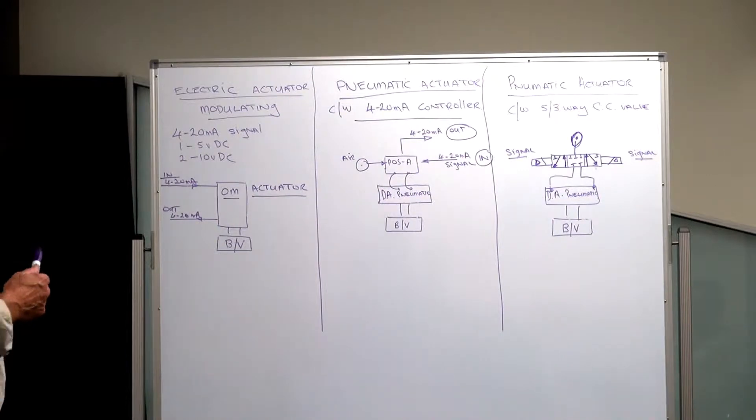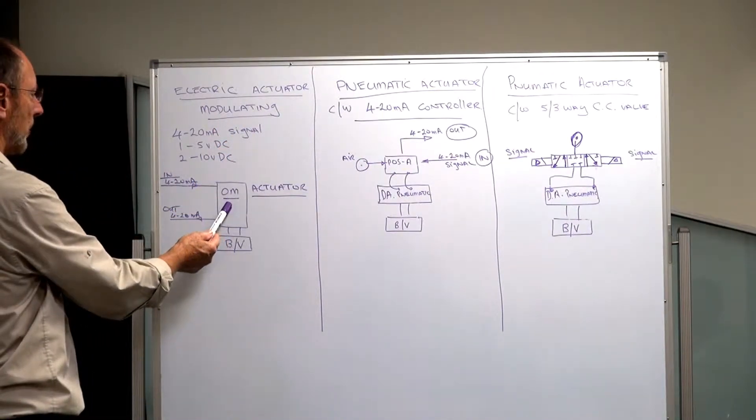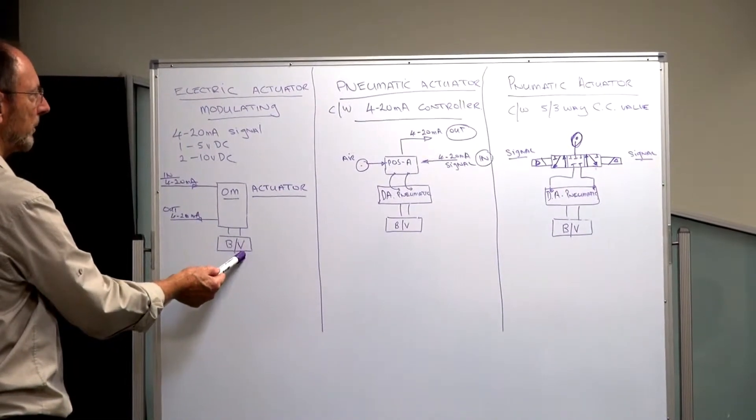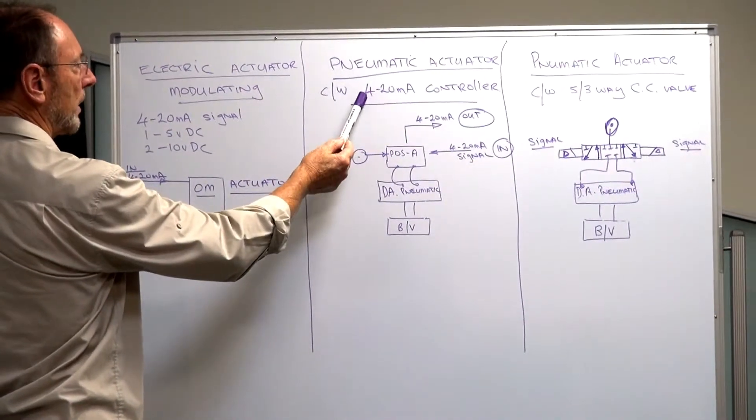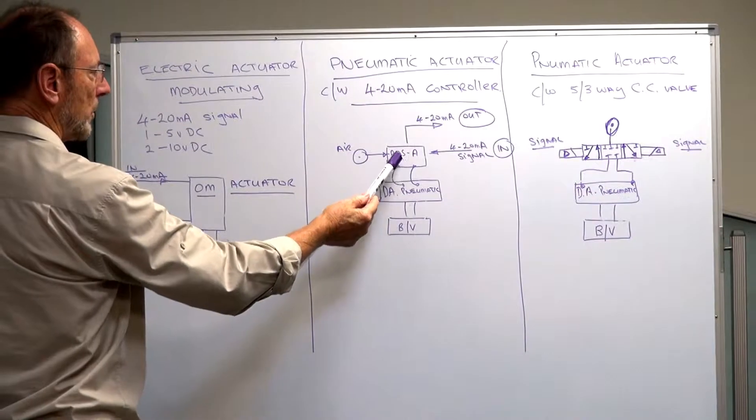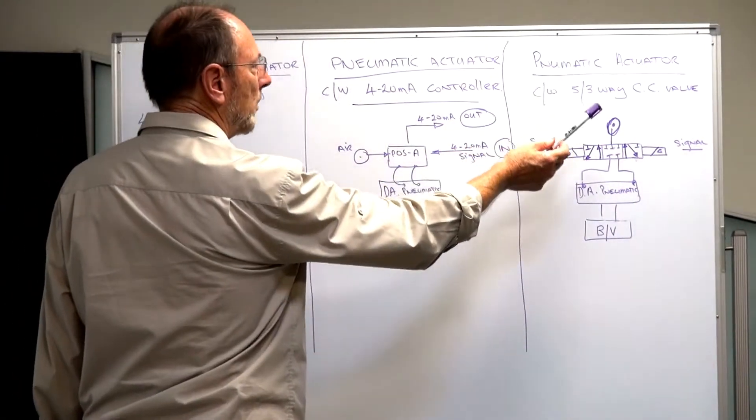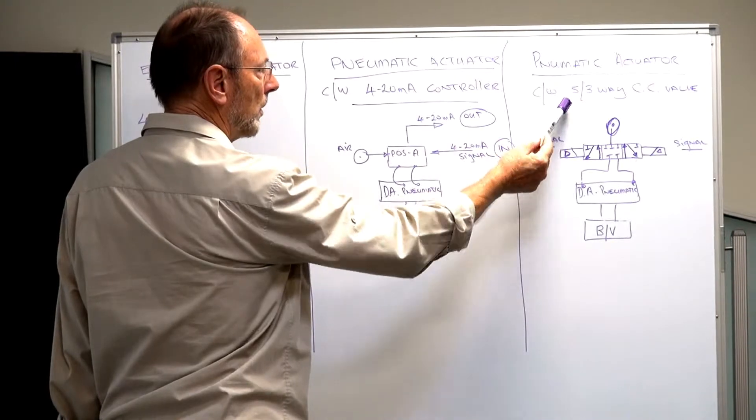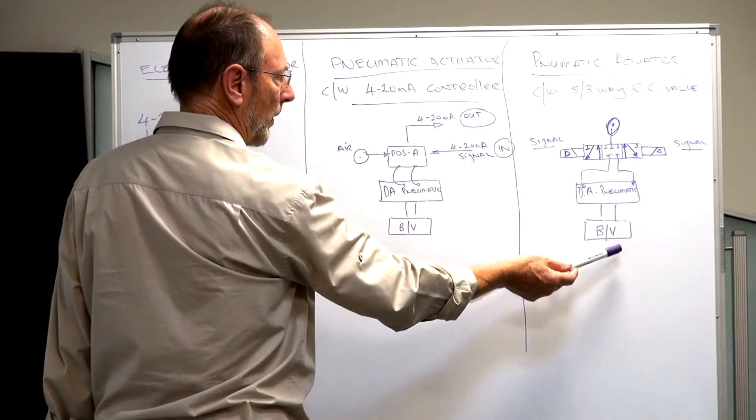We have three different applications for modulating actuation. Electric actuator modulating using a fully motorized valve control valve operating a ball valve or butterfly valve. Pneumatic actuator with a pneumatic electric controller which is controlling a double acting actuator and ball valve. And we have a pneumatic actuator complete with a solenoid valve with five three center control which we can inch the actuator opening and closing, so of a double acting actuator and ball valve or butterfly valve.